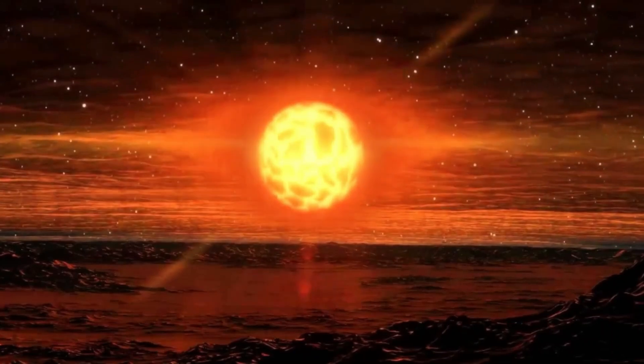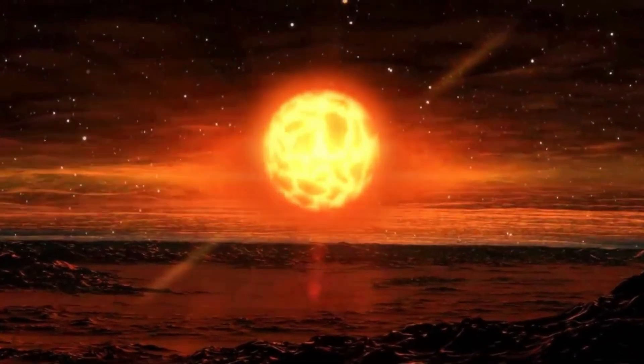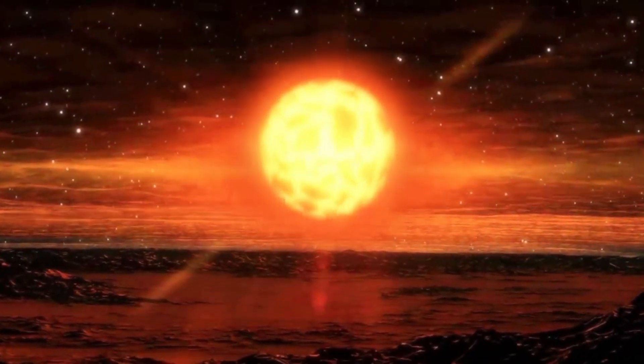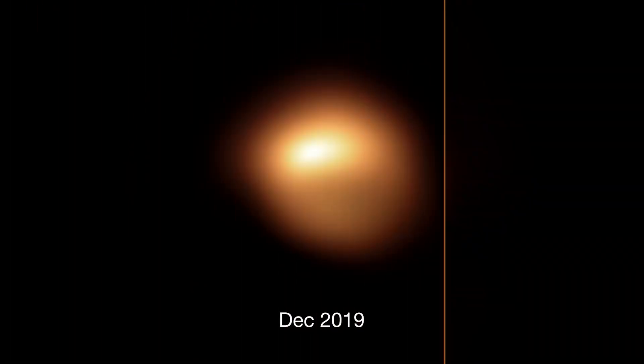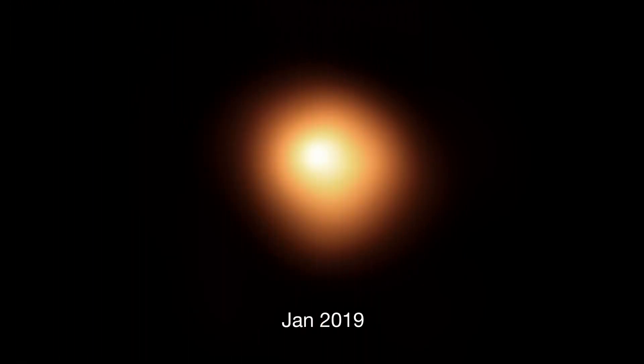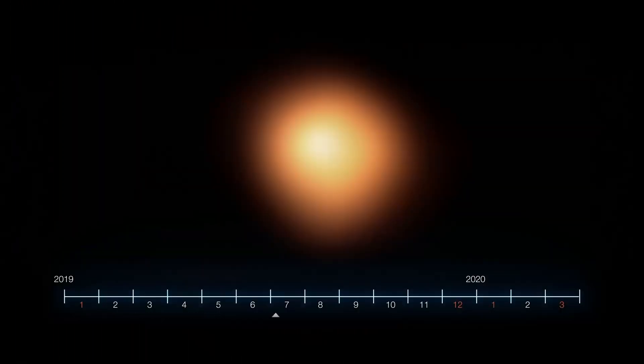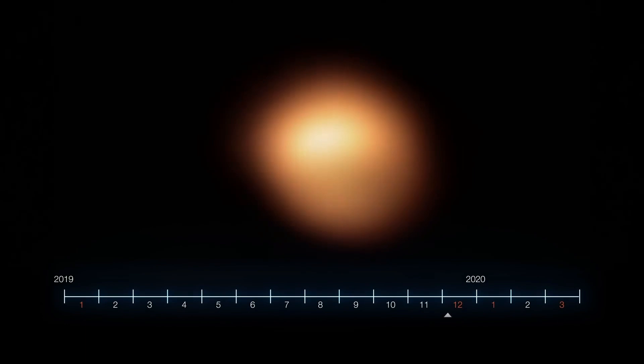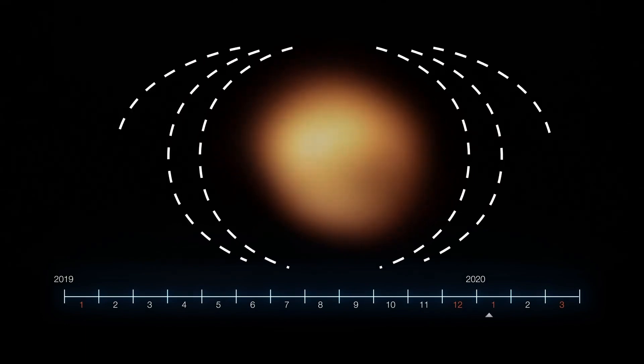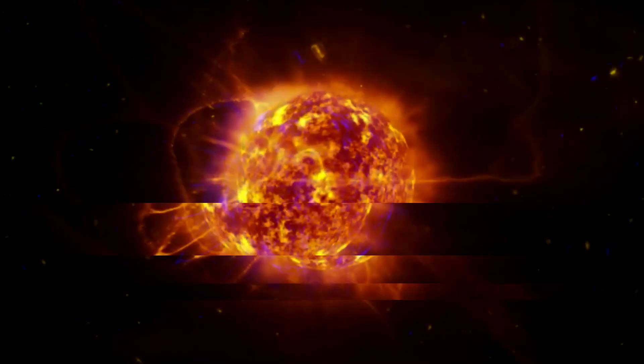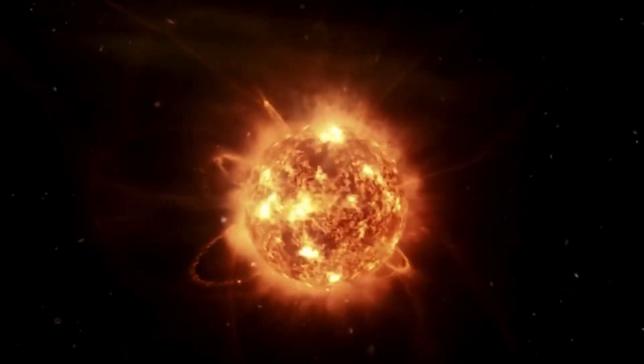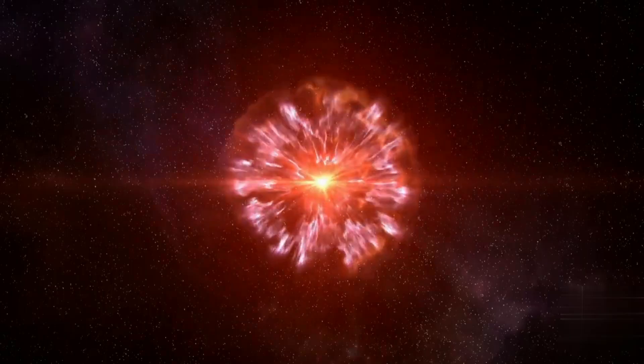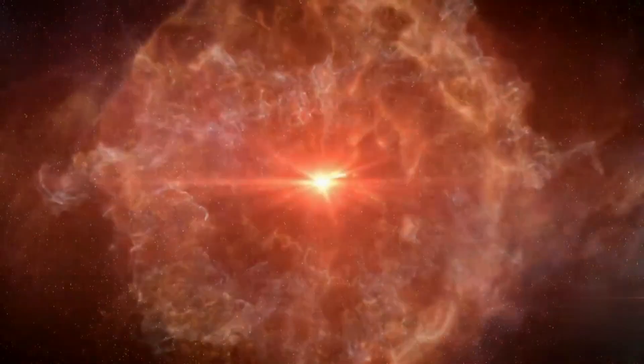For centuries, Betelgeuse has exhibited pulsations with its brightness changing on a roughly 400-day cycle. However, in late 2019, the star began to dim in a way that was far beyond its typical fluctuations. By February 2020, Betelgeuse had reached its lowest brightness, dropping to less than 40% of its usual luminosity. This event, known as the Great Dimming, sparked widespread speculation that Betelgeuse might be on the verge of exploding as a supernova.